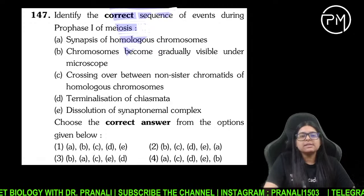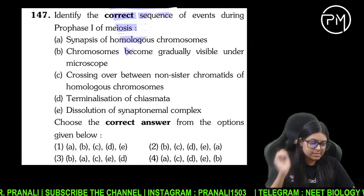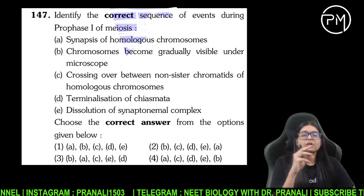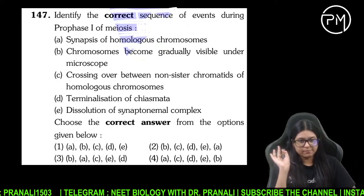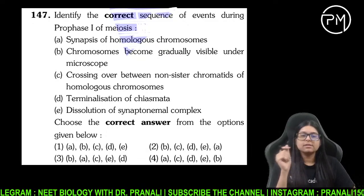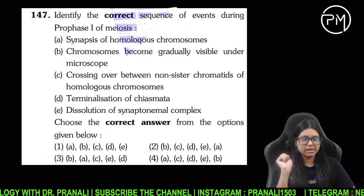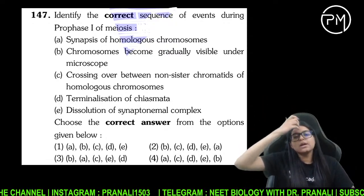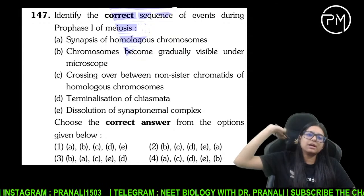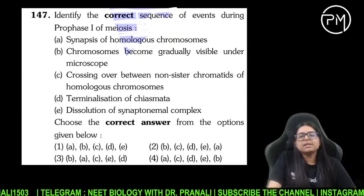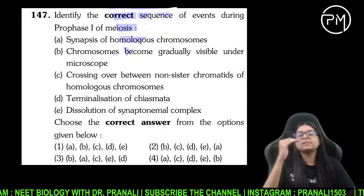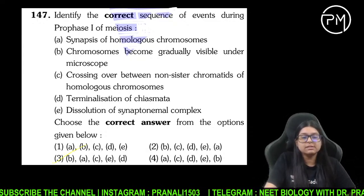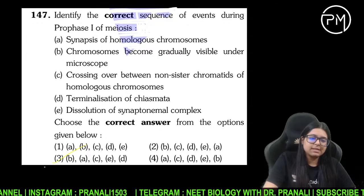Correct sequence batayiye Prophase 1 ki. Sabse pehle chromatin condense hoke chromosome banta hai. Jaise hi chromosome banta hai, phir homologous chromosomes ka synapsis hota hai. Phir woh crossing over karta hai — synaptonemal complex banta hai. Phir woh dissolve ho jaata hai, aur phir aakhir mein terminalization of chiasmata. Yeh sequence hai: Leptotene, Zygotene, Pachytene, Diplotene, Diakinesis.